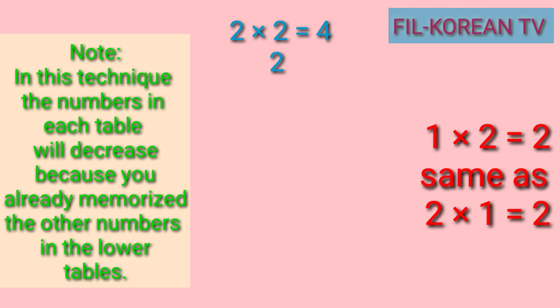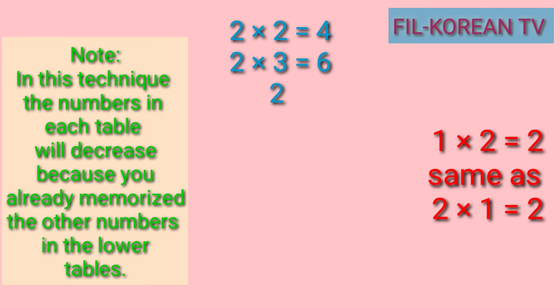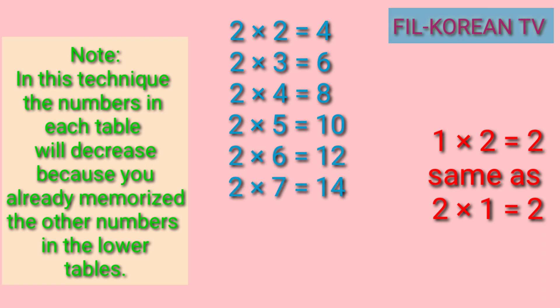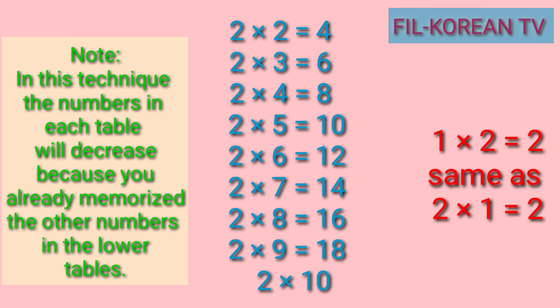Table 2. 2 x 2 equals 4. 2 x 3 equals 6. 2 x 4 equals 8. 2 x 5 equals 10. 2 x 6 equals 12. 2 x 7 equals 14. 2 x 8 equals 16. 2 x 9 equals 18. 2 x 10 equals 20. Kung mapapansin ninyo, may nabawa sa inyong mimemorize sa table 2. Kasi na-memorize nyo na yun sa table 1. Yung answer sa 1 x 2 at saka sa 2 x 1 ay pareo lang, hindi yun magbabago. Kaya binawas na natin dito.